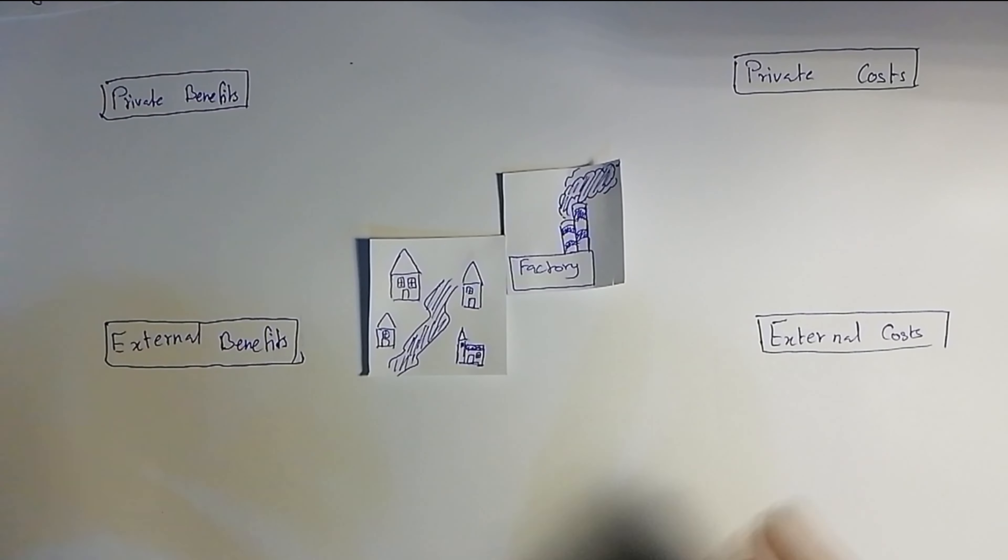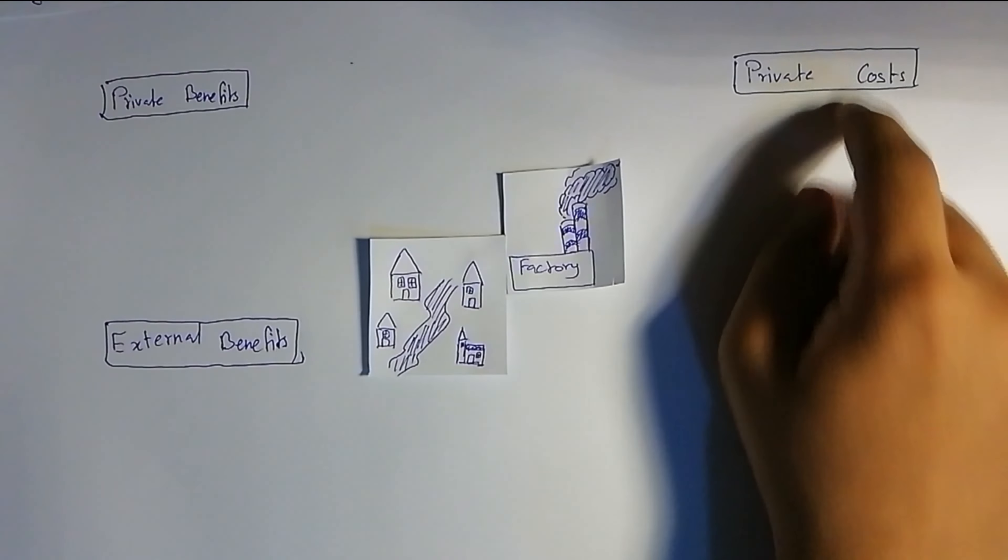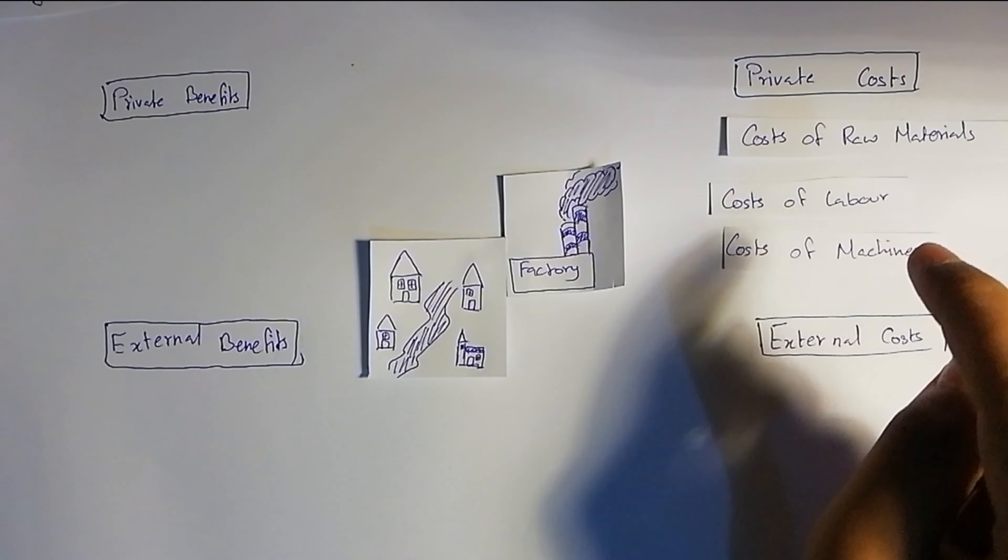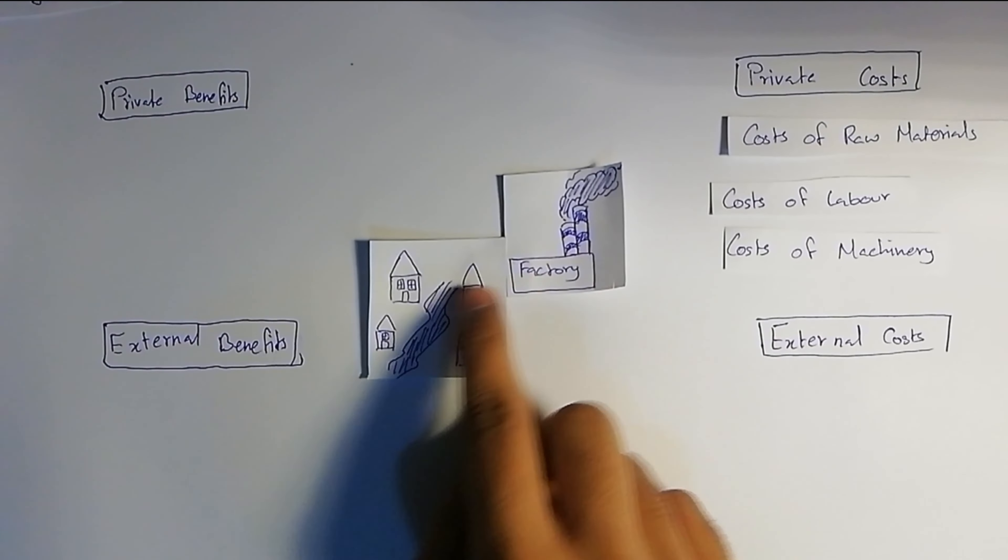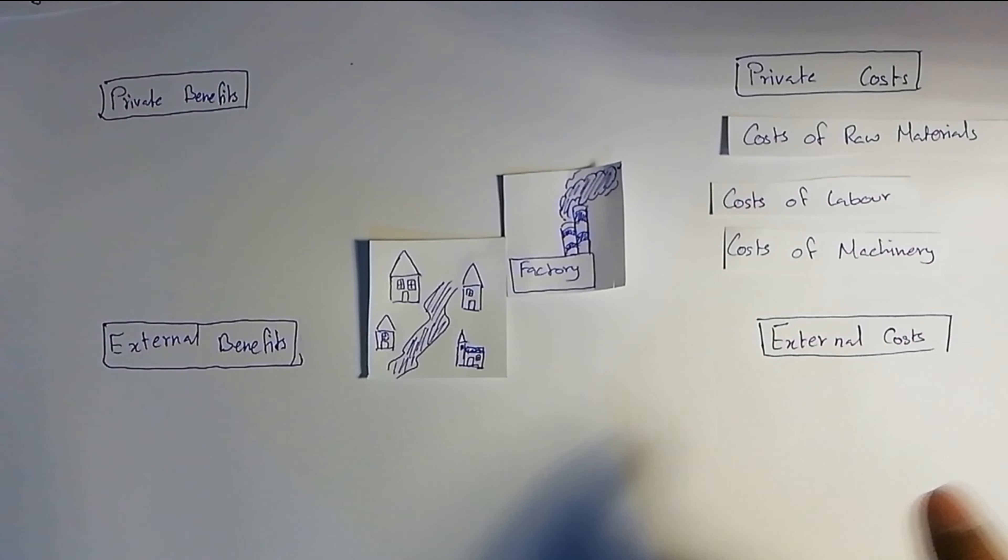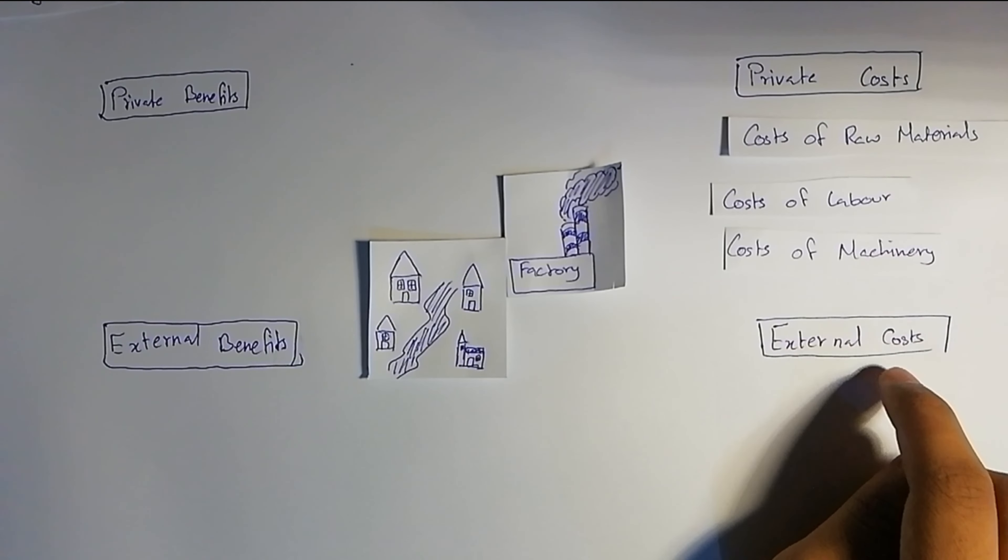So you have a factory and a village. We're going to talk about these four terms and where they are over here. Private costs first. You have these three: cost of raw material, cost of labor, and cost of machinery. Private costs are the costs which are incurred by a firm, individual, or government for the production and consumption of a product. To produce a product, whatever is coming out of this factory, they have to pay for raw materials, labor, and machinery.